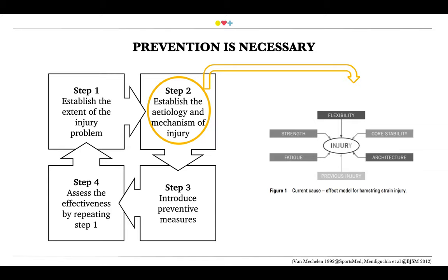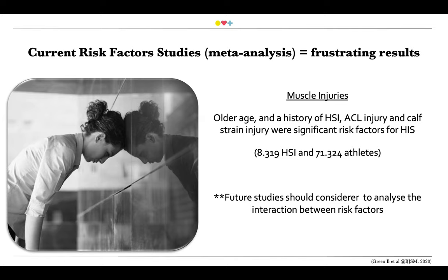Traditionally, the investigation of factors that underlie the occurrence of sports injuries has been concentrated on a linear and unidirectional causality, which we can see here in this figure. However, this approach has focused on identifying isolated risk factors and has led us to frustrating results.